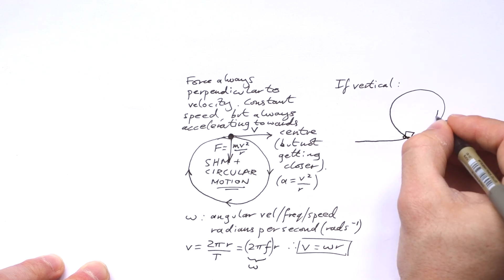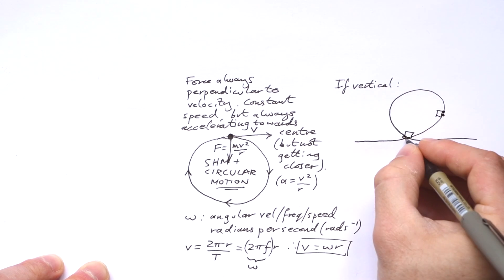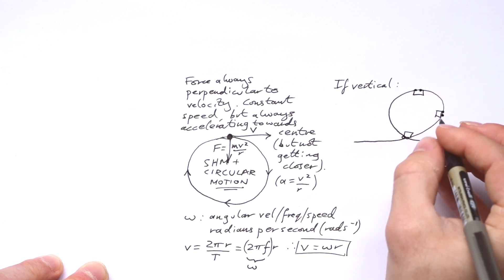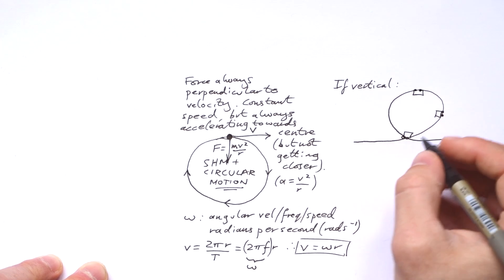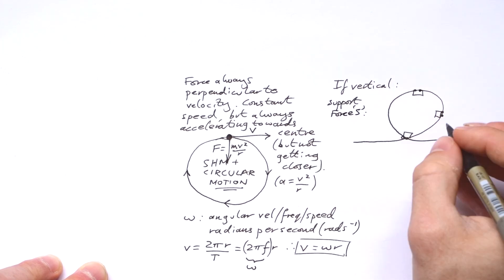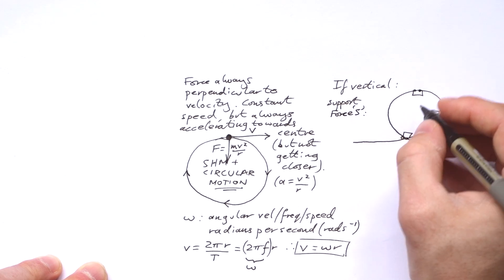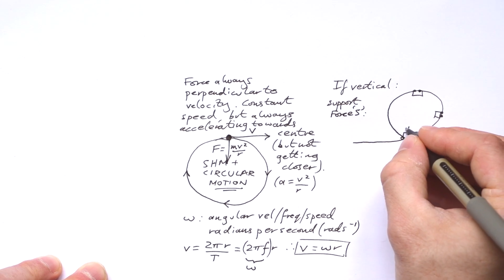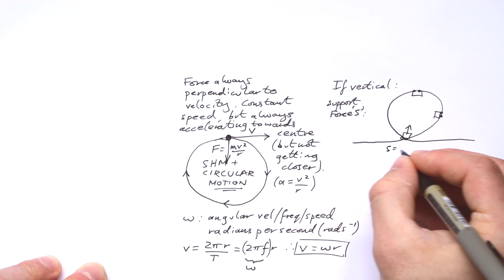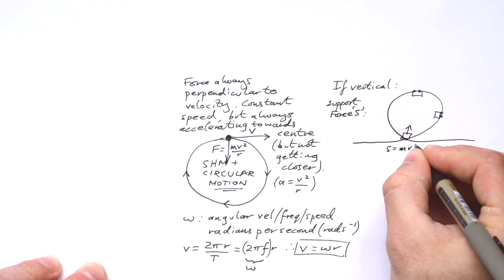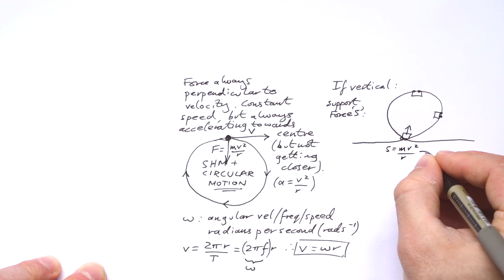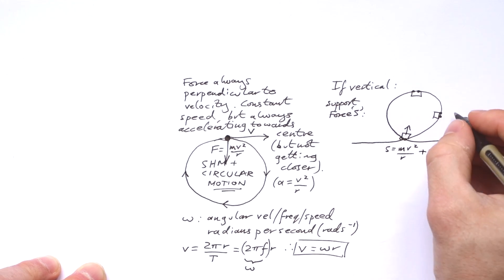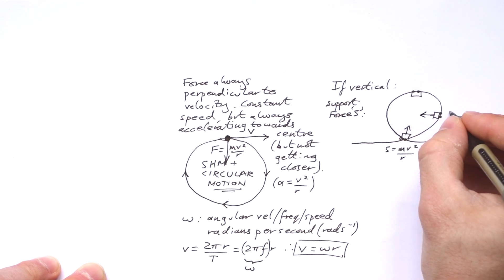Okay, so what if we have something going in a circle vertically, like a loop for a roller coaster, quite often we'll be asked to find the support force at different points. At the bottom, just think, what would the support force have to be just to hold a stationary roller coaster car there? Well, it would be just mg. But the support force is not only supplying a force to balance the weight, but it's also supplying the centripetal force. So it's mv squared over r plus mg.